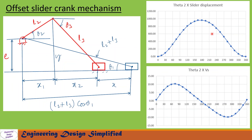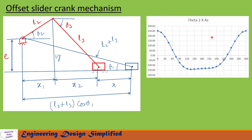In this graph we have plotted theta2 versus slider displacement — theta2 along the horizontal and slider displacement along the vertical — showing the variation of slider displacement with respect to theta2. Similarly, in this graph we have plotted theta2 versus slider velocity, showing the variation of slider velocity with respect to theta2. In this graph we have plotted theta2 versus acceleration of the slider, showing the variation of slider acceleration with respect to theta2.